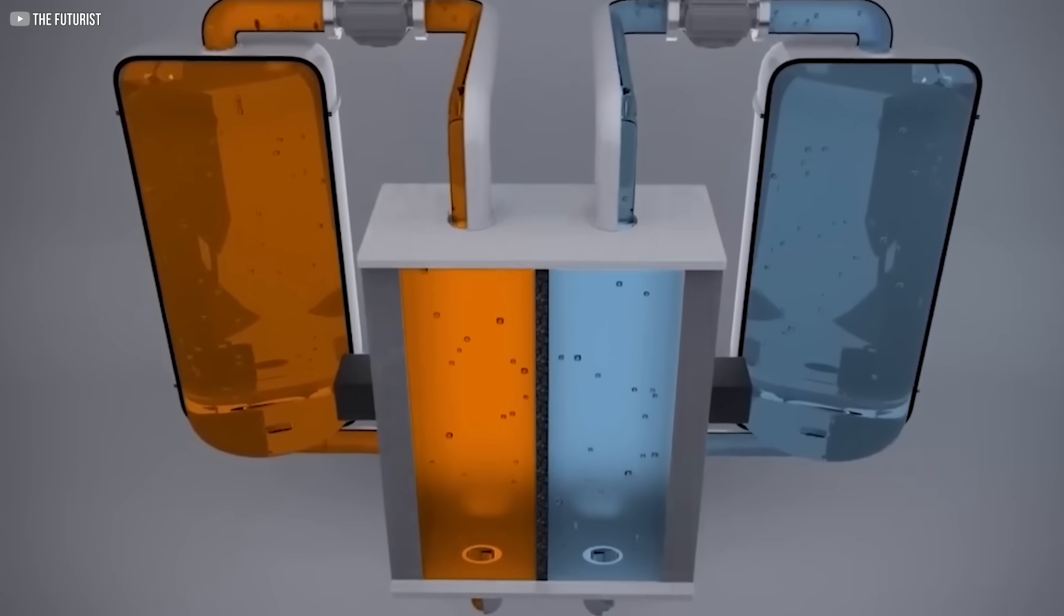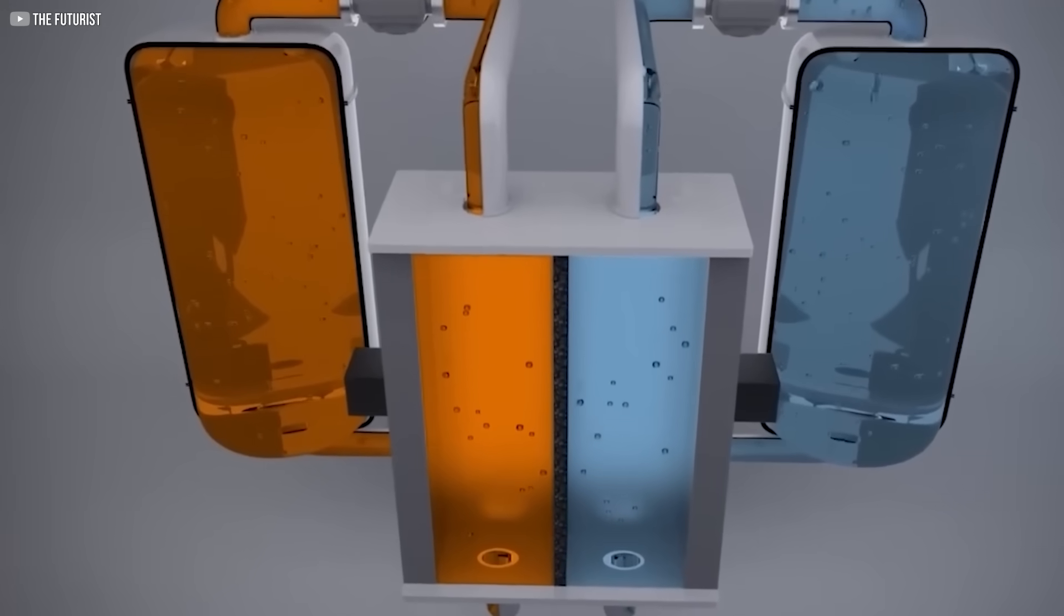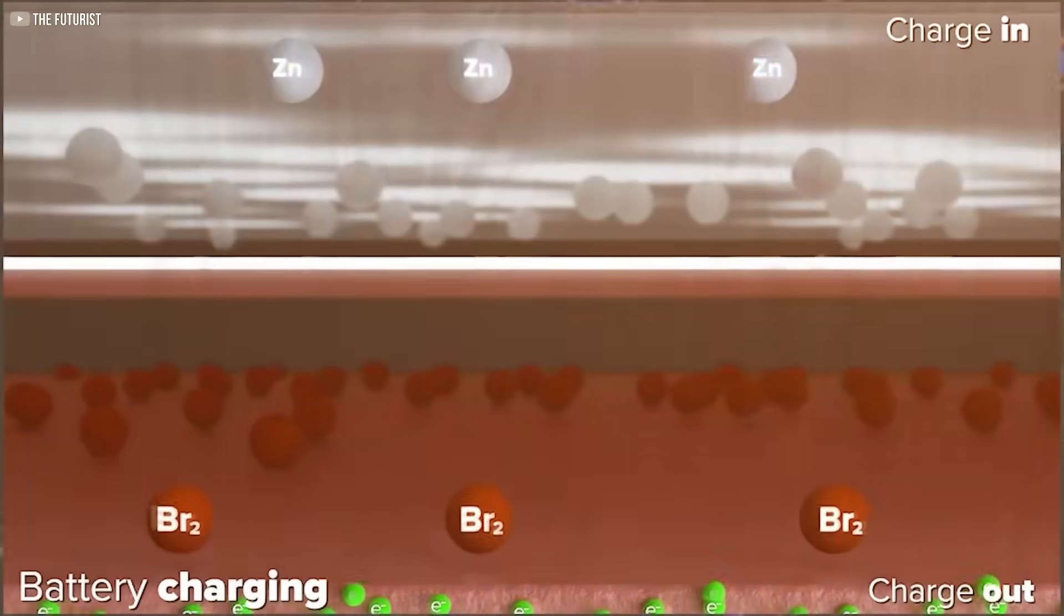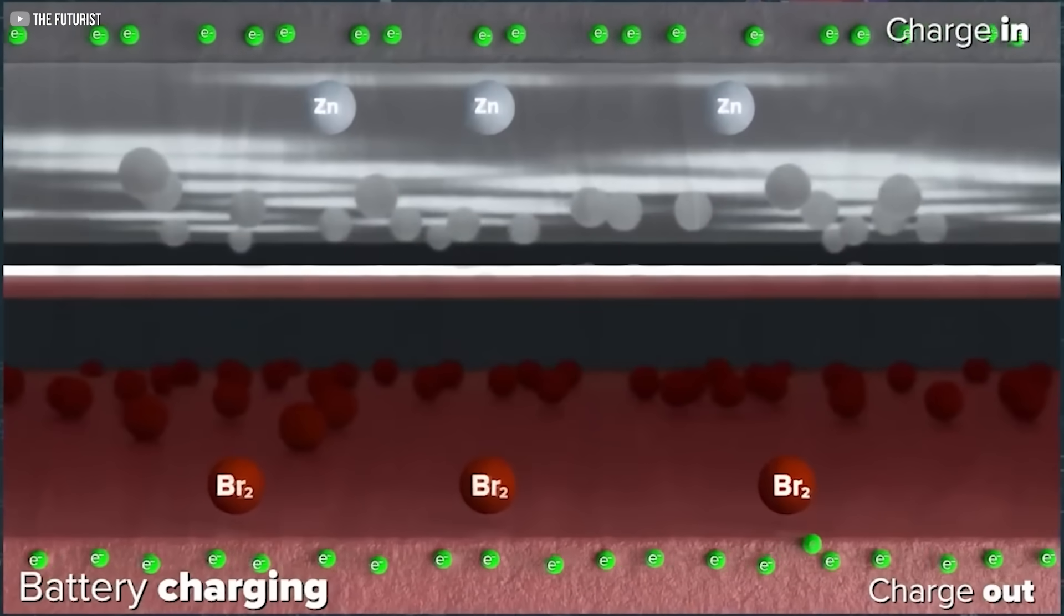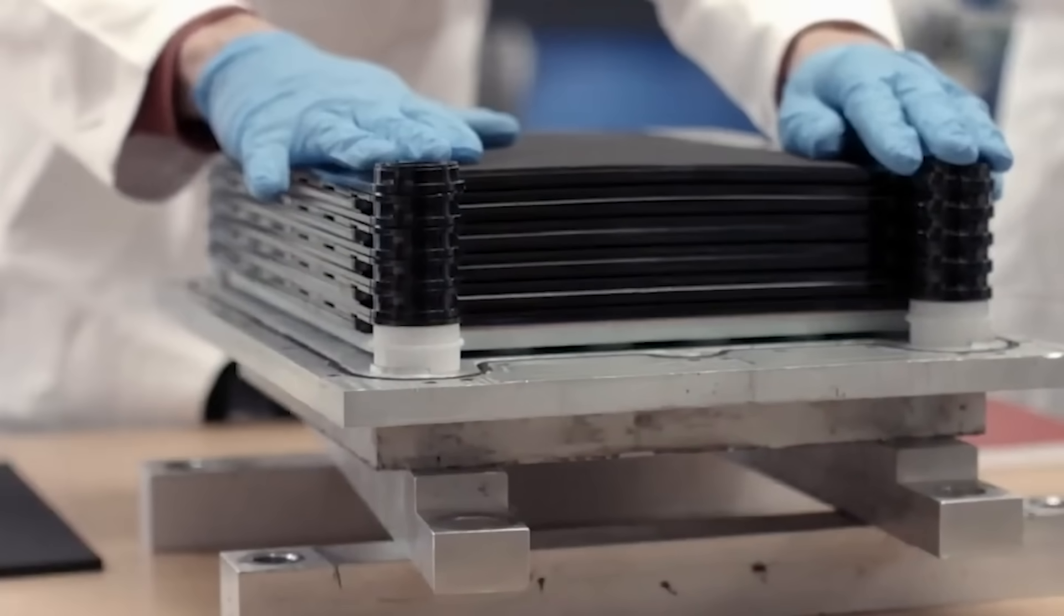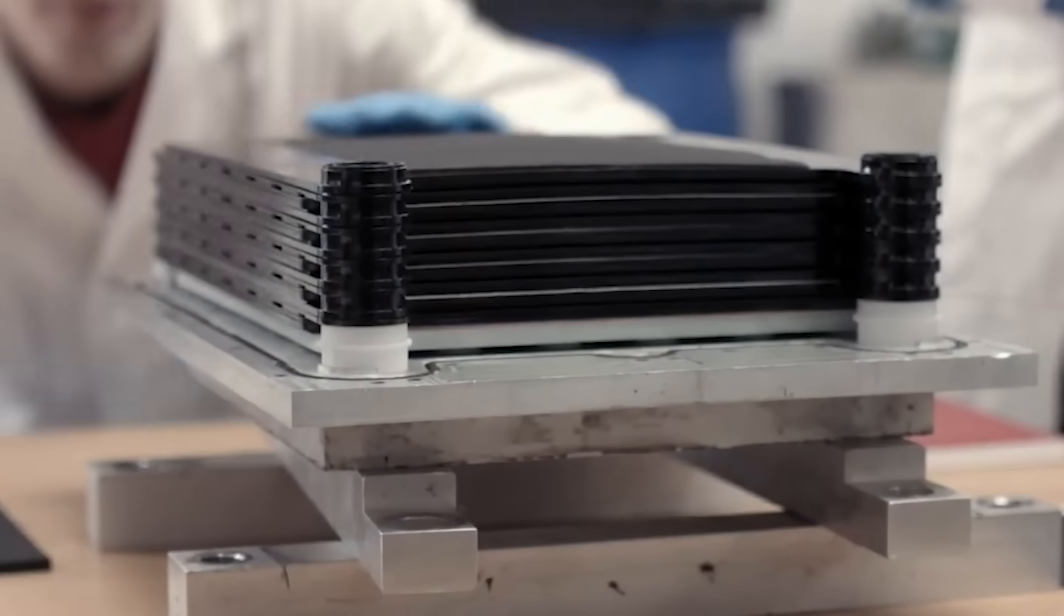Zinc bromine isn't perfect. Its bromine component still poses health hazards if mismanaged. But it's stable. And it stinks. It leaks easily to detect. In a world full of risky chemistries, that kind of quiet safety matters.